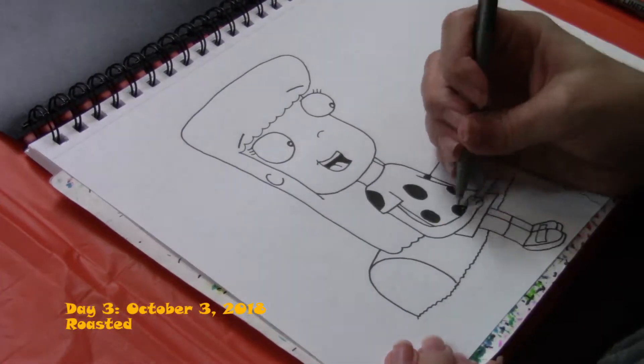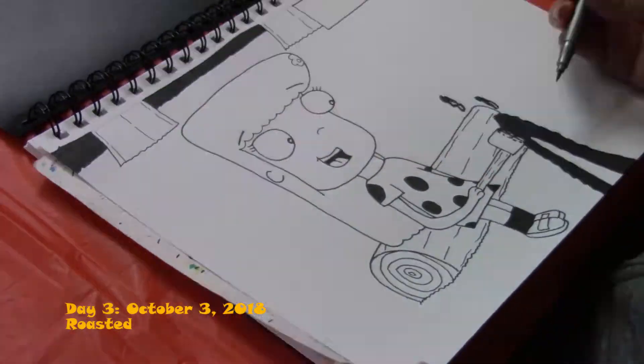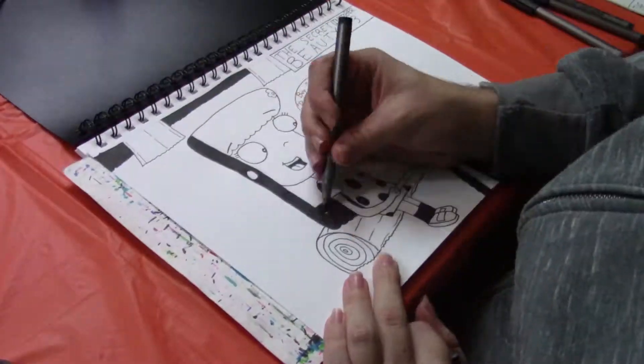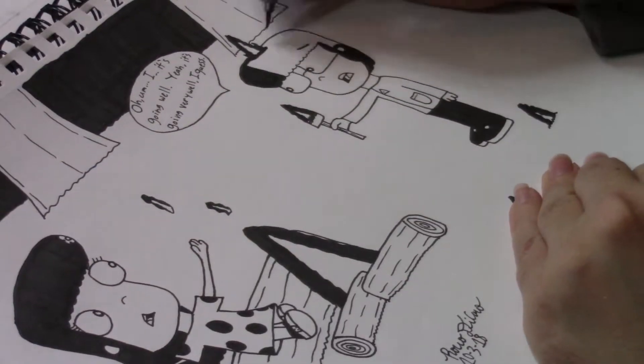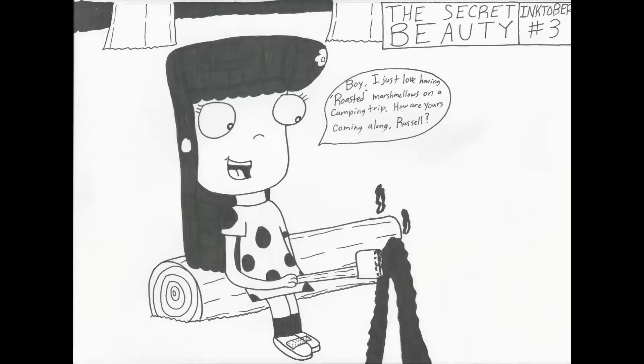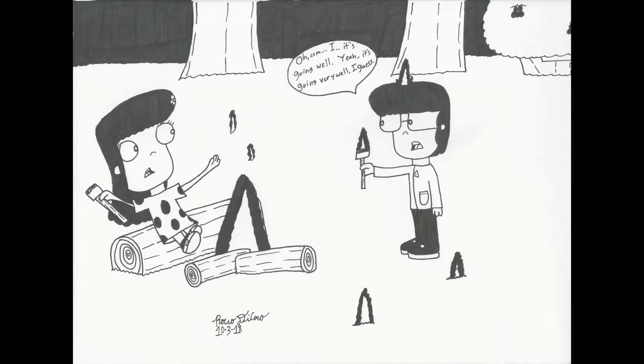Comic number three uses the prompt word roasted. So, I created a story of River and Russell on a camping trip cooking up some roasted marshmallows. This comic is two panels. Boy, I just love having roasted marshmallows on a camping trip. How are yours coming along, Russell? Oh, um, it's going well. Yeah, it's going very well, I guess.